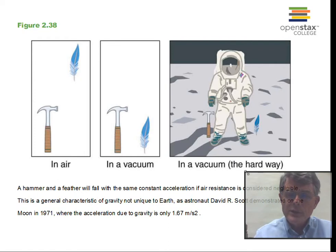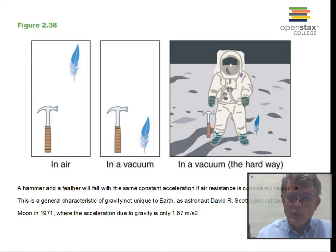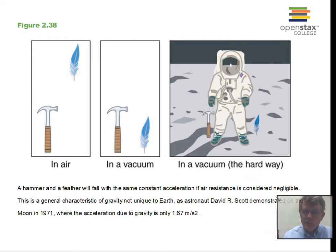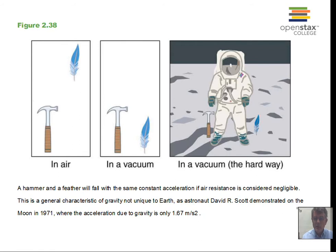We now come to the study of motion in a vertical direction under the influence of the acceleration due to gravity. And on the Earth, we have a complication called air resistance.